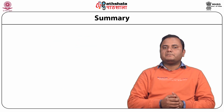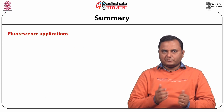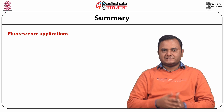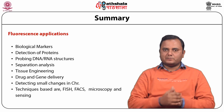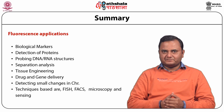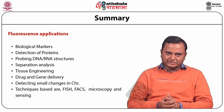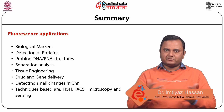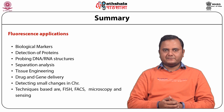Applications include protein oligomerization, DNA hybridization techniques, protein-DNA and protein-protein interactions, protein-ligand interactions, ligand-receptor binding, and enzyme reaction kinetics. Fluorescence spectroscopy is widely used for biological markers, detection of proteins, probing DNA and RNA structure, separation analysis, tissue engineering, drug and gene delivery, and detecting small changes in chromosomes. Techniques based on fluorescence include FISH (fluorescent in situ hybridization), FACS (fluorescent activated cell sorter), fluorescence microscopy, and sensing applications.